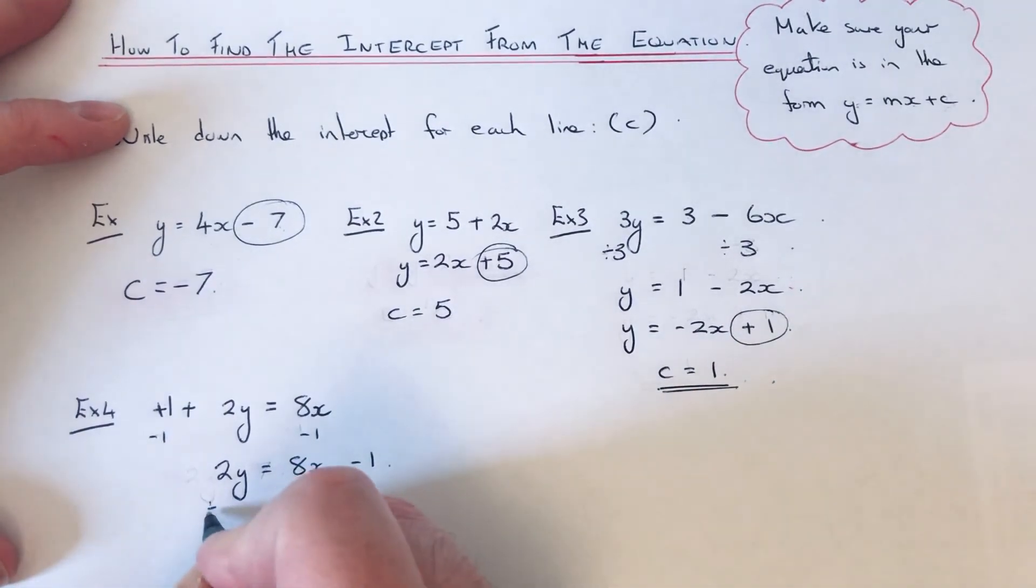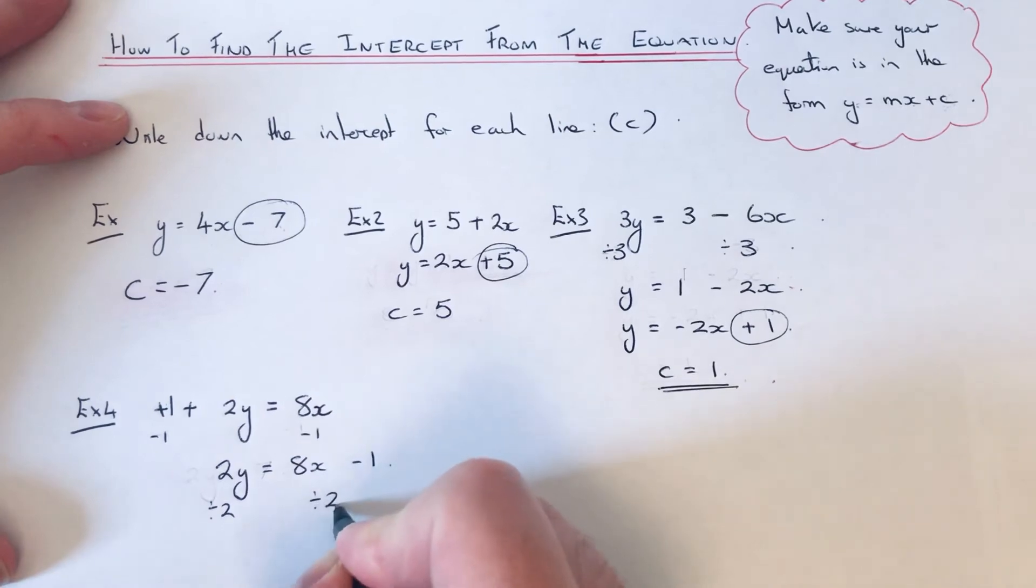Then we need to divide both sides by 2. So that will give y equals 8x divided by 2, which is 4x, minus 1 divided by 2. I'm just going to leave that as a fraction, as minus 1 half.